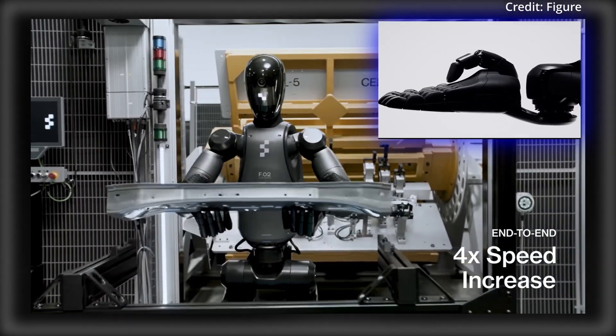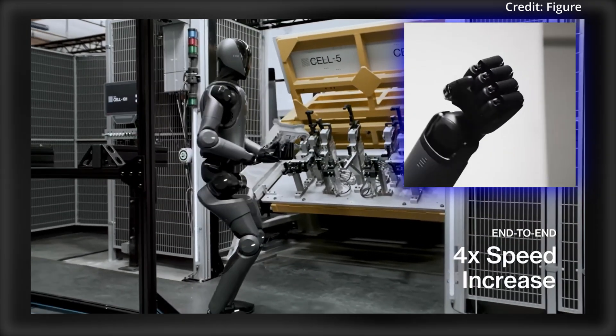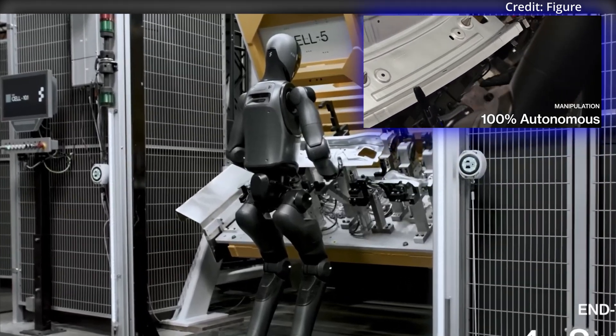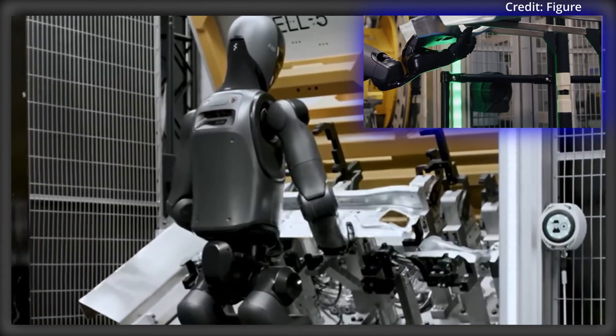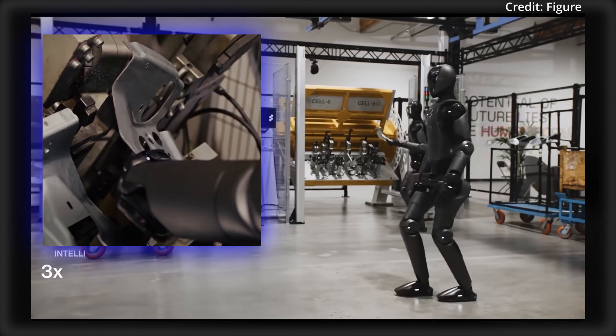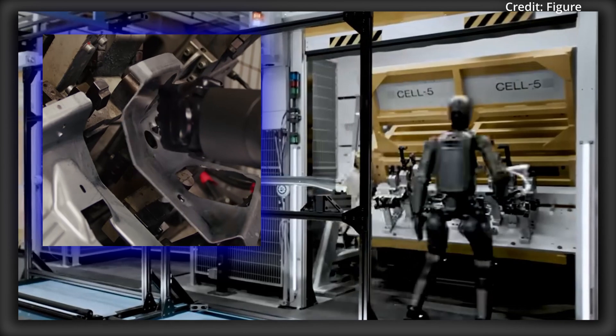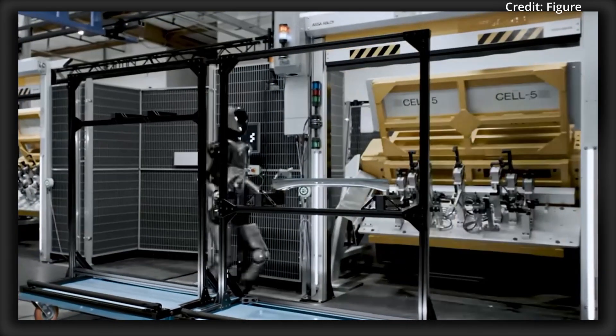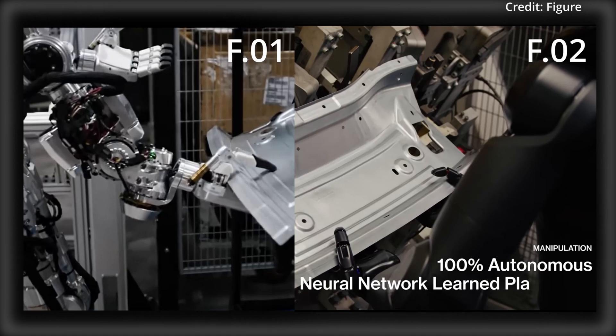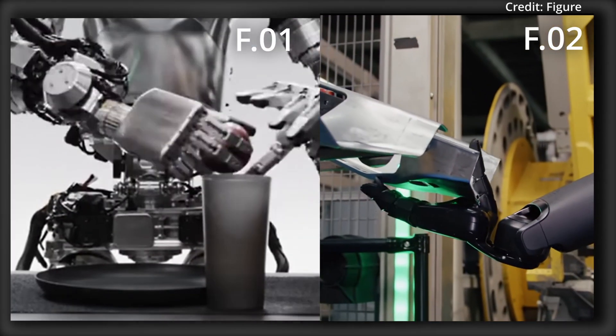But these improvements aren't just about speed, because they actually reflect a growing level of intelligence and adaptability that positions the Zero-Two as a game-changer for human labor. As for the secret to their success, Figure employs a cutting-edge strategy of deploying its humanoids in simulated environments known as physical-digital twins. These are virtual replicas of customer sites that allow the robots to refine their movements and decision-making processes, helping to harden their operational readiness before live deployments.